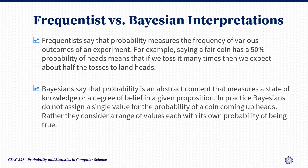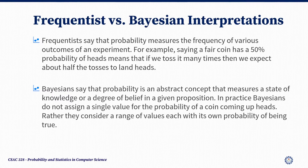The frequentist says that probability measures the frequency of various outcomes of an experiment. For example, saying a fair coin has a 50% probability of heads means that if we toss it many times, we expect about half of the tosses to land heads. Meanwhile, in the Bayesian view, probability is an abstract concept that measures a state of knowledge or a degree of belief in a given proposition.